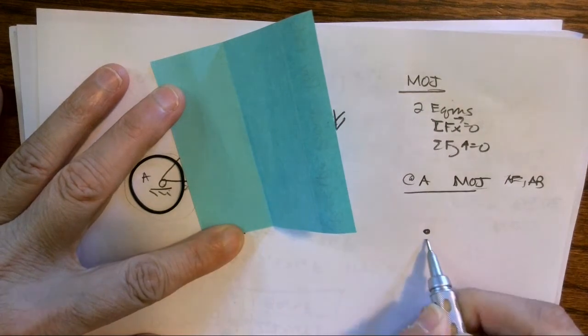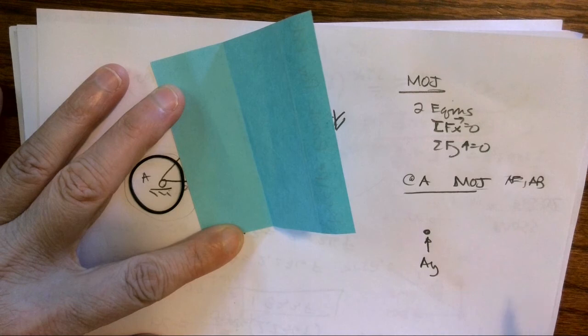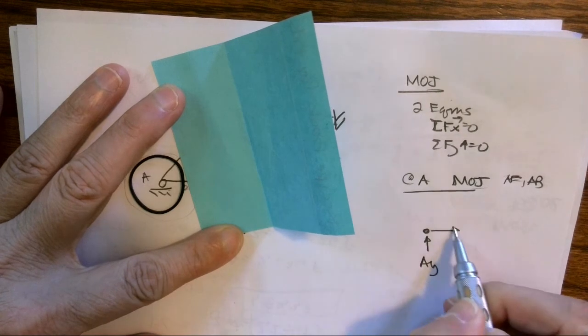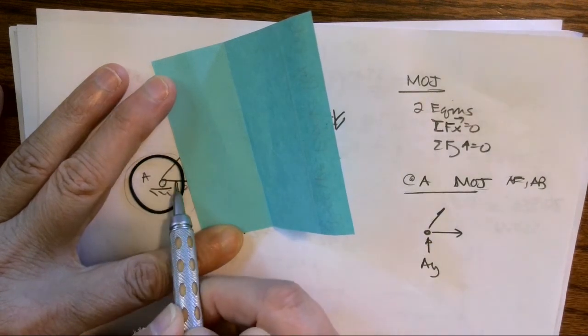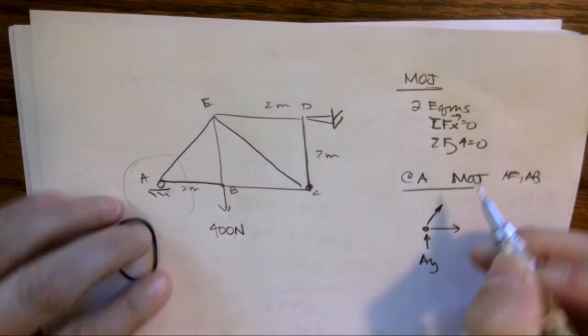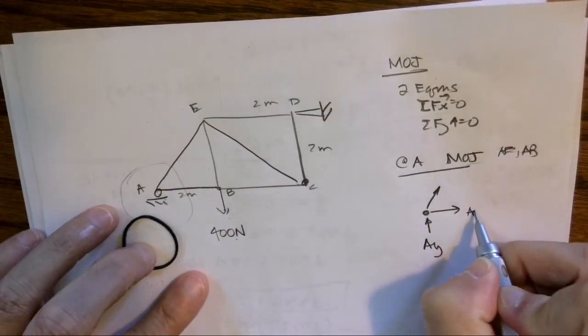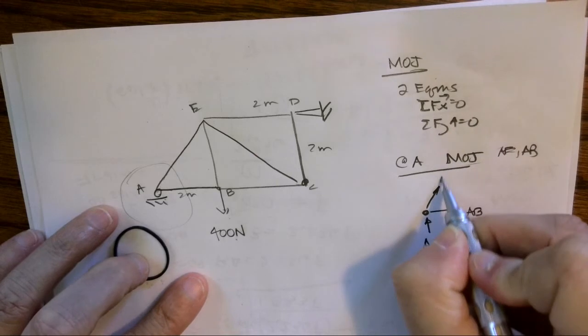So really all that I can see here at point A is I have a roller, which I don't know that reaction yet—we're going to assume it goes up—and then I'm going to draw these two members. I'm going to assume that these are in tension and I'm going to label them force AB, force AE.